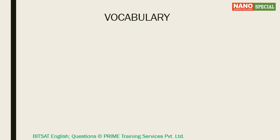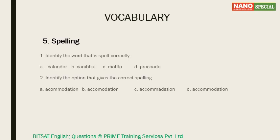The next question type is spelling. There are two ways in which this question appears. The first type is: identify the word that is spelt correctly. You have four options and have to find the one spelt correctly.